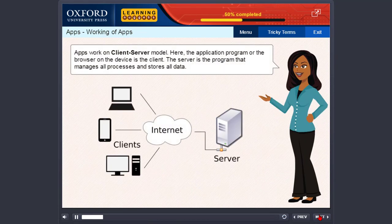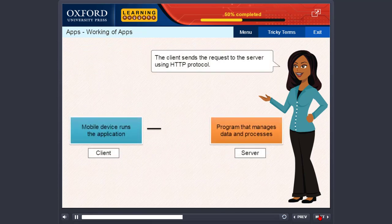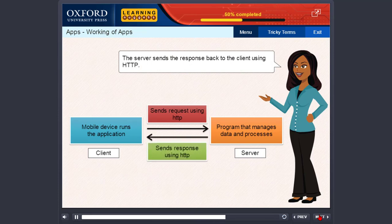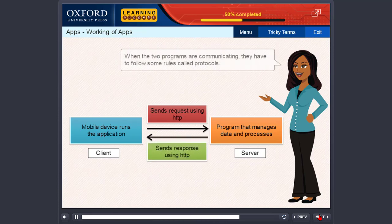Apps work on a client-server model. Here, the application program or the browser on the device is the client. The server is the program that manages all processes and stores all data. The client sends the request to the server using HTTP protocol. The server sends the response back to the client using HTTP protocol. When the two programs are communicating, they have to follow some rules called protocols.